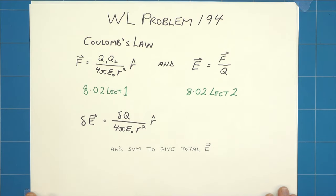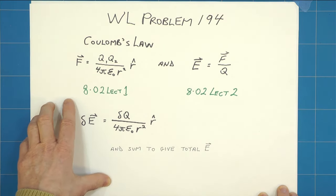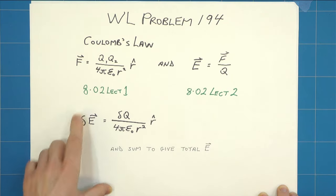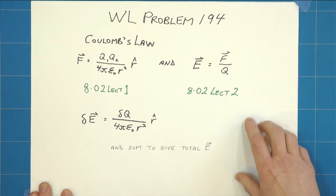This is Keith's solution to Walter Lewin's problem 194. To solve it we need to know Coulomb's law, which we learn about in Walter Lewin's lecture 1 of 802, and also the electric field which we learn about in